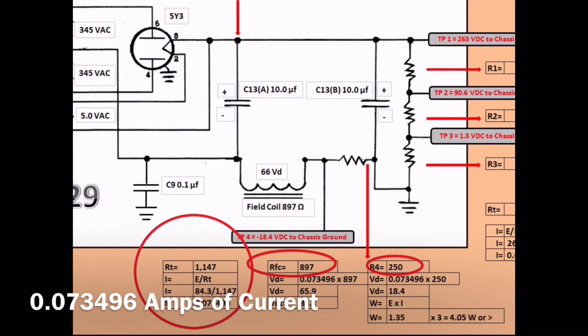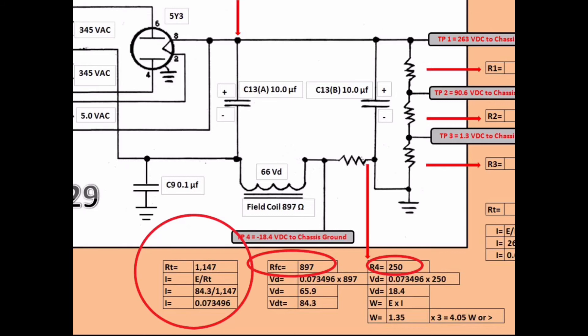You can see the voltage drop across each section. Right at 66 volts for that speaker field coil. And an additional 17 or 18 volts there for the 250 ohm resistor.